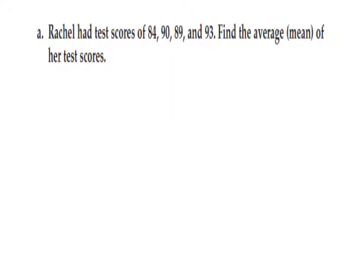All right, we're now on our second objective, which is to find the average of a set of data. In this problem A, Rachel has test scores of 84, 90, 89, and 93. Find the average mean of her test scores. The first part of our definition in the first slide said find the sum of our data set. So, that means I'm going to add all these numbers, 84, 90, 89, and 93. 354 is the total.